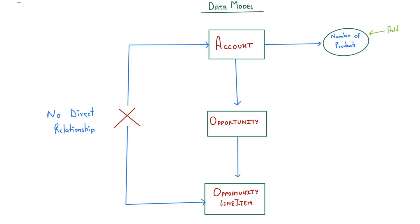Before going to the coding part, let's talk about the data model for today's scenario. We have three objects: Account, Opportunity, and Opportunity Line Item. On Account there is a field called 'Number of Products.' Account is the parent of Opportunity, and Opportunity is the parent of Opportunity Line Item. What makes today's scenario more interesting is that there is no direct relationship between Account and Opportunity Line Item.